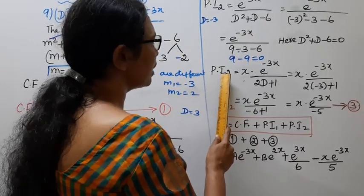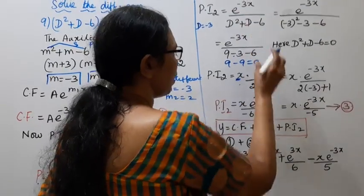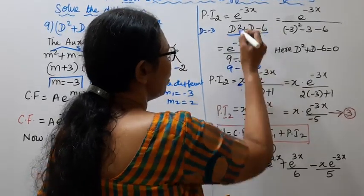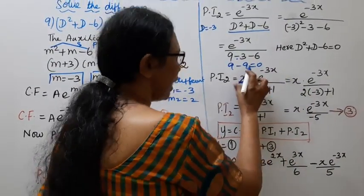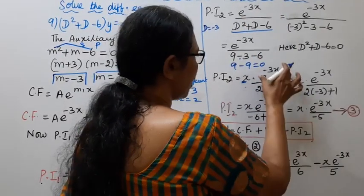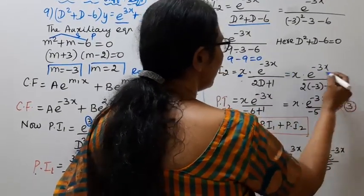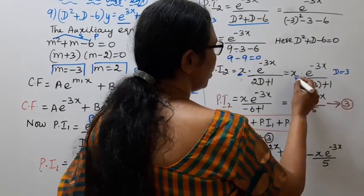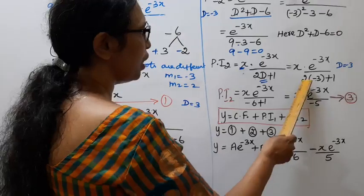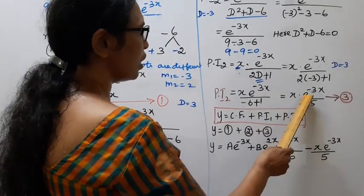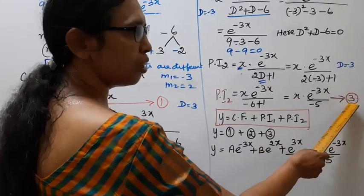When the denominator is 0, we multiply x into the numerator and differentiate the denominator. Differentiating D² + D − 6 gives 2D + 1. Substituting D = −3: 2(−3) + 1 = −6 + 1 = −5. So particular integral 2 = x · e^(−3x) / (−5).